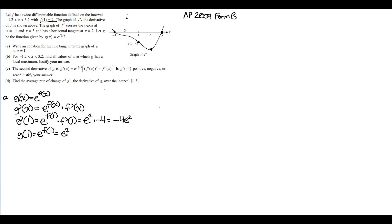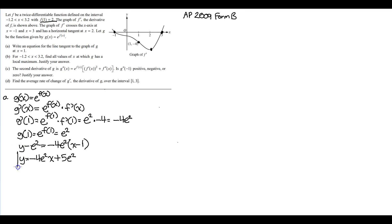Using point-slope form: y minus y₁ = m(x minus x₁), where y₁ = e², m = negative 4e², and x₁ = 1. So we get y = negative 4e²·x plus 4e² plus e², which simplifies to y = negative 4e²x + 5e². This is our tangent line.